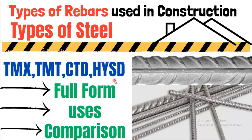Welcome to this video where we will discuss different types of rebars used in construction. Rebar is short for reinforcement bars. The classification of steel according to application is TMX, TMT, CTD, and HYSD. We will discuss the full form of each, along with their uses and characteristics.